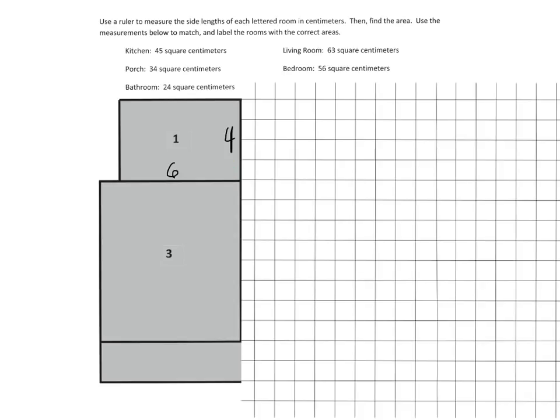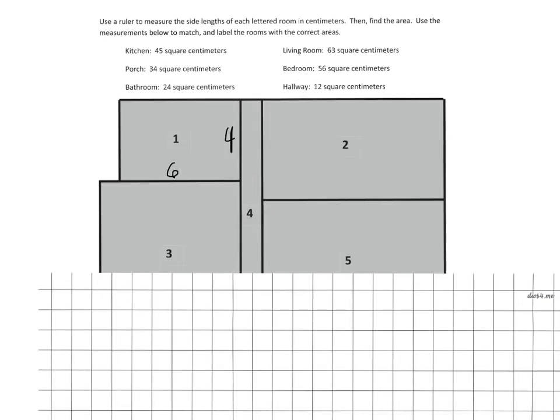And so the area of number one is 6 times 4, which is 24. So I can see that this rectangle, number one, is the bathroom.